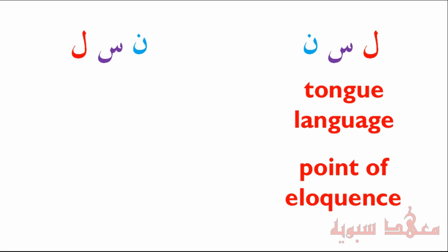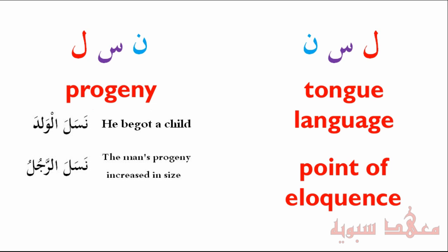From the same letters rearranged we get another three-letter root used in the Quran — the نون, the سين, and the لام — and from this root we get the word for progeny, which is quite interesting, because language is something that lives on from generation to generation.